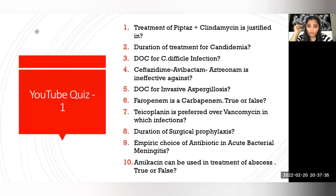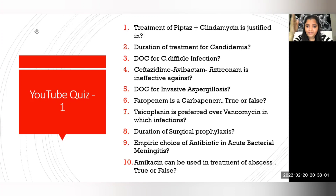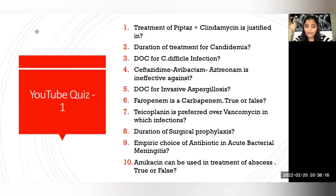This brings us back to YouTube Quiz 1 — these were 10 questions. Let me answer briefly. Treatment with Pristinamycin is justified whenever you require an antitoxic effect, such as in PVL toxin-producing or necrotizing pneumonia. Duration of treatment for candidemia is 14 days after the culture clears. Drug of choice for C. diff infection as per IDSA is fidaxomicin; if unavailable, oral vancomycin. Ceftazidime-avibactam-aztreonam is ineffective against Acinetobacter, as well as anaerobes and gram-positives.